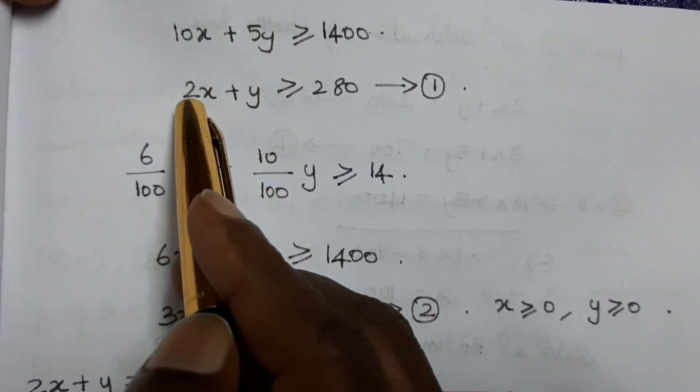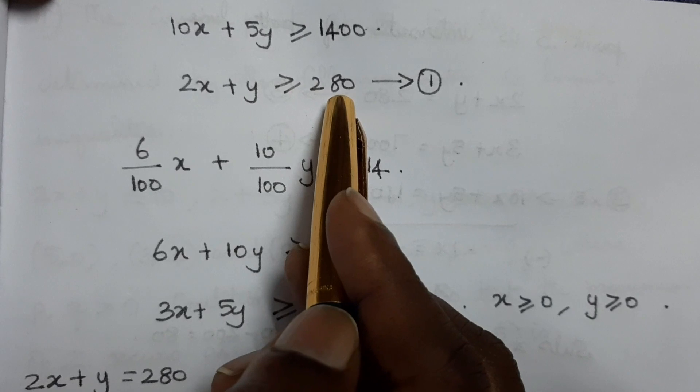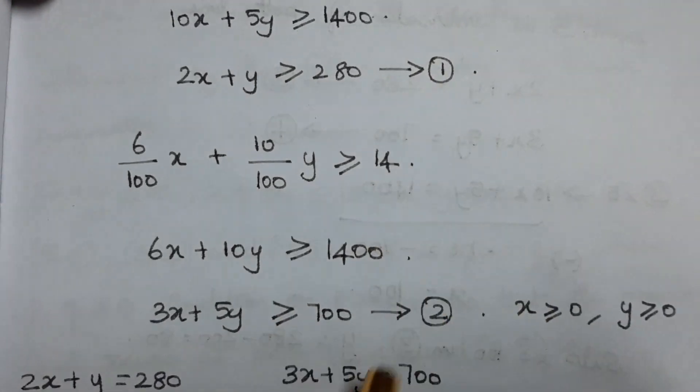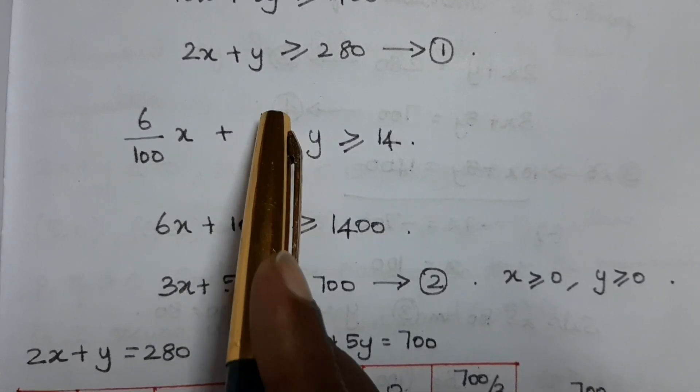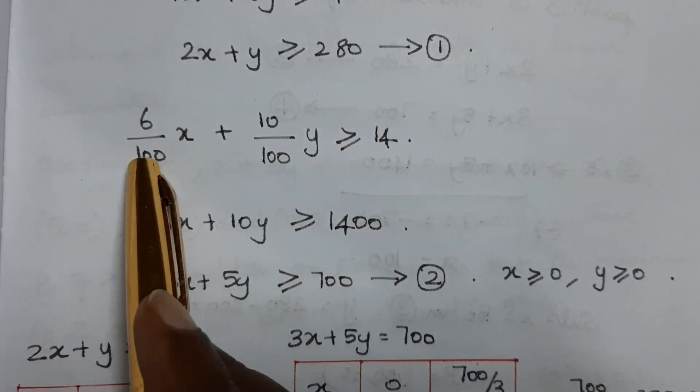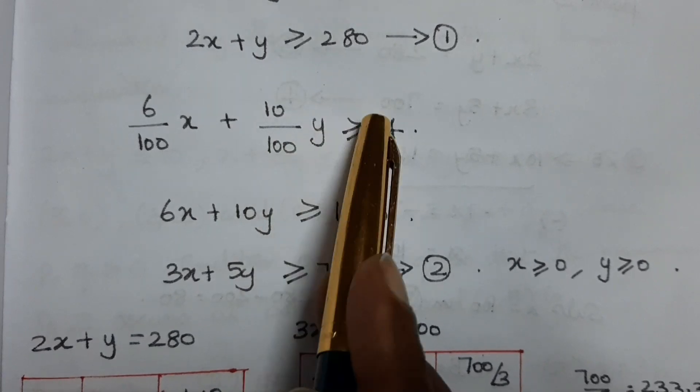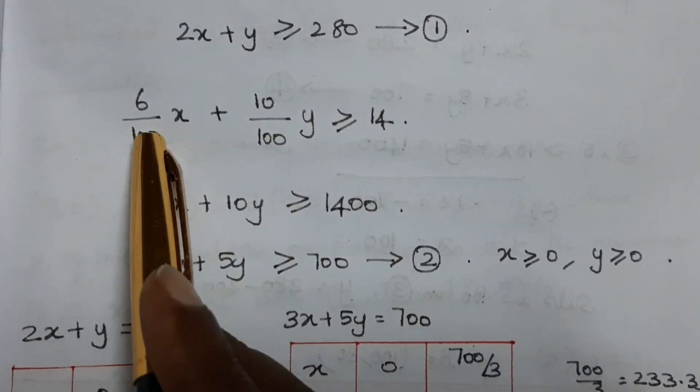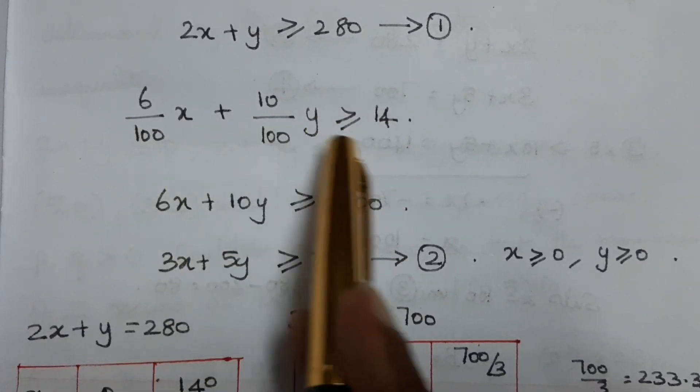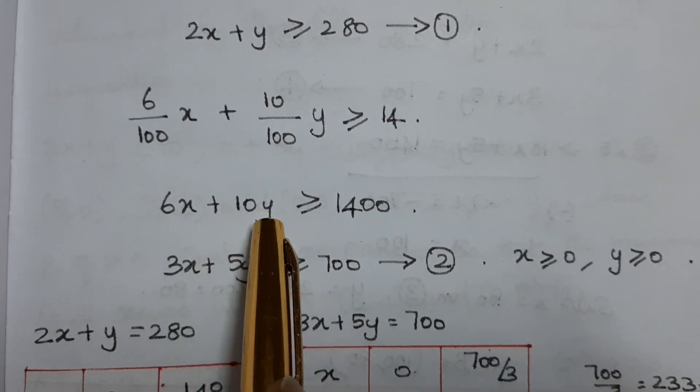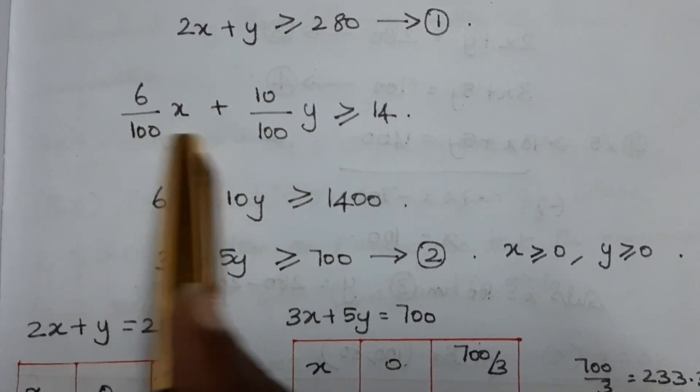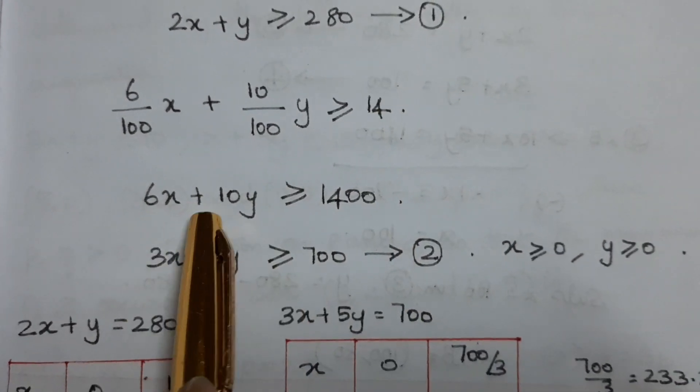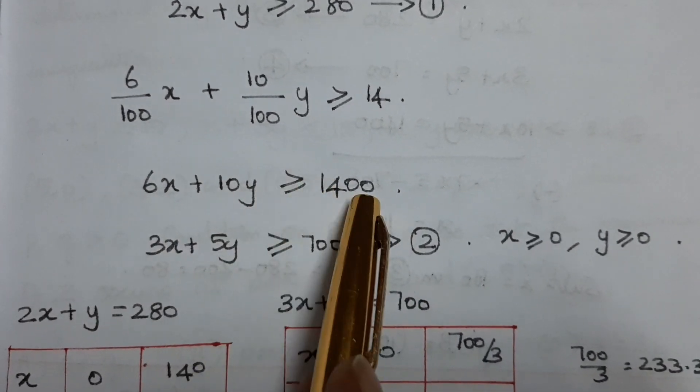Simplifying, 2x plus y equals 280. For phosphoric acid, 6x plus 10y greater than or equal to 14, which becomes 6x plus 10y greater than or equal to 1400.